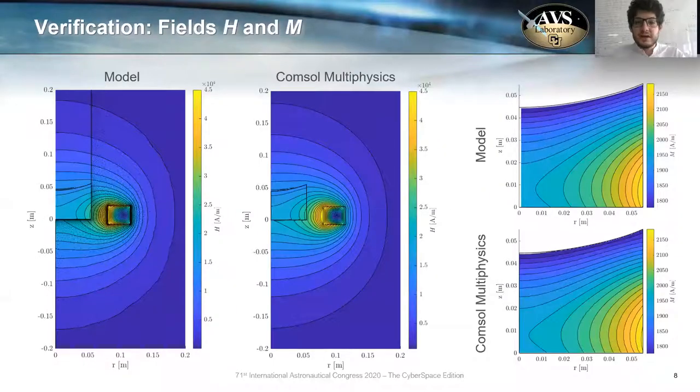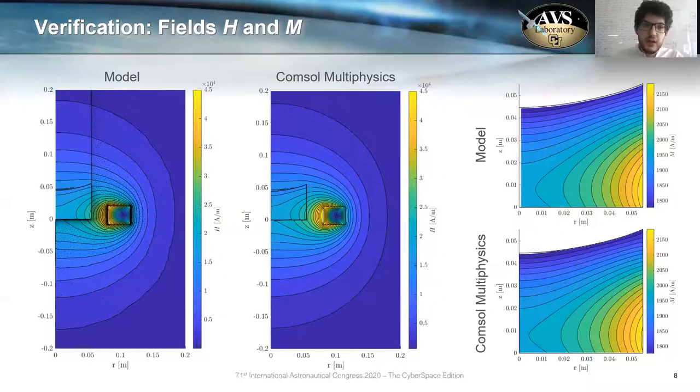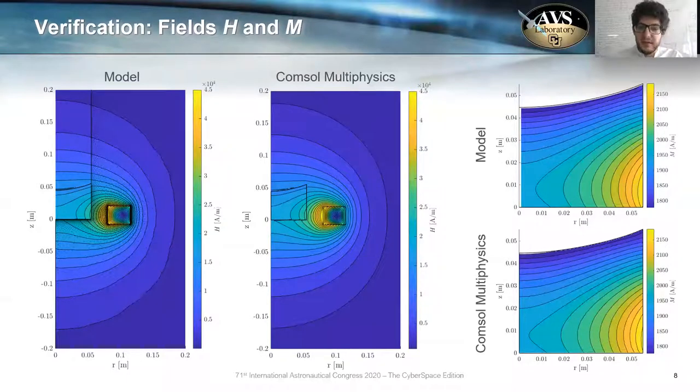Now, since this model has already been validated with measurements taken at the International Space Station and with many other problems, we focus on our verification. In the magnetic side of the system, here you can see the magnetic field H compared with an equivalent simulation in COMSOL Multiphysics, and you can see they are practically identical. The same happens with the magnetization field inside the ferrofluid domain. And this result gives us confidence that the system is working properly, at least the magnetic system is working properly.